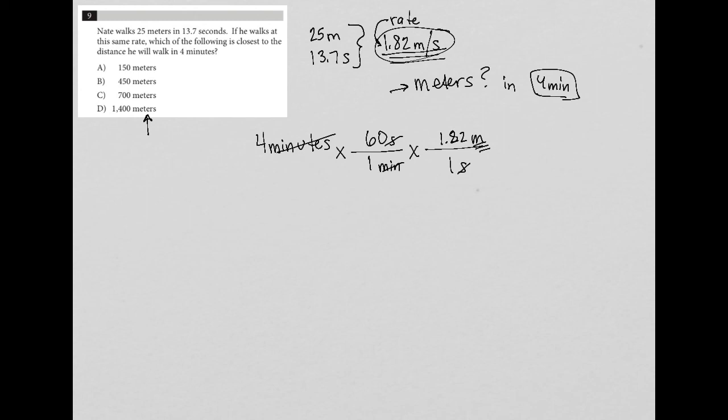So let's multiply this out. So four times 60 times 1.82. What I'm getting from that is 436.8 meters is how far he'd be able to go walking at that rate.